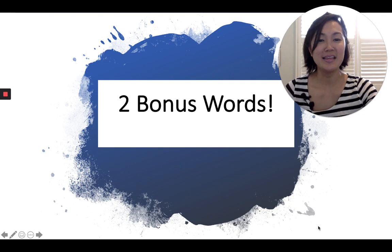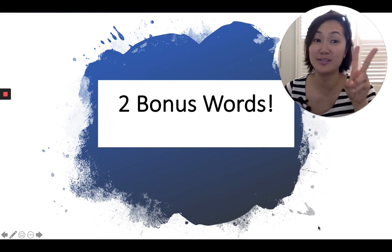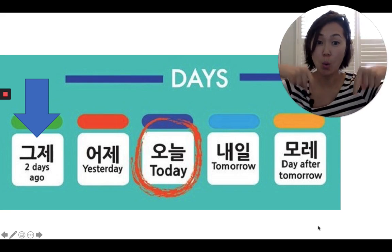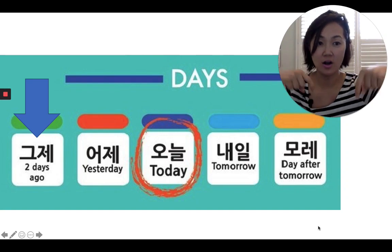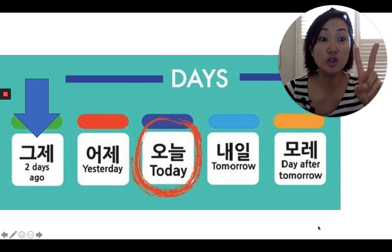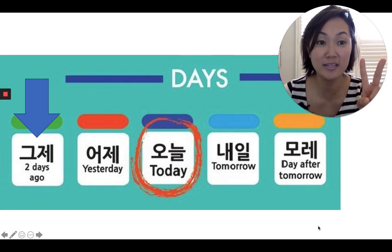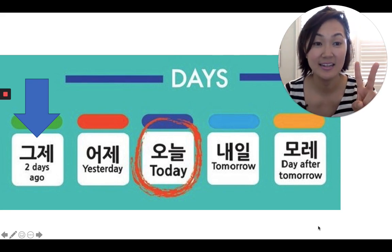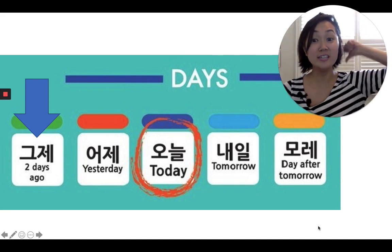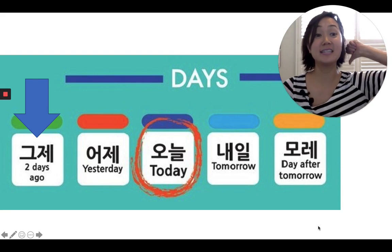The last thing I want to teach you is two bonus words. We learned 어제, 오늘, and 내일. But how do you say two days ago in Korean? You say 그제. Yesterday was 어제, but two days ago is 그제. So one day back is 어제, and two days ago is 그제.